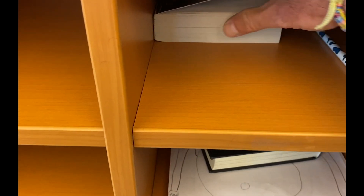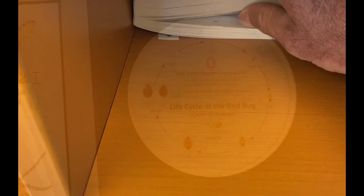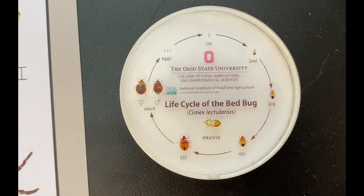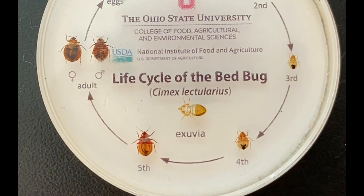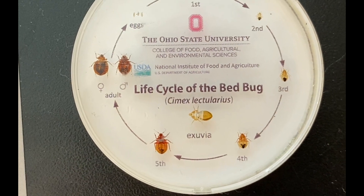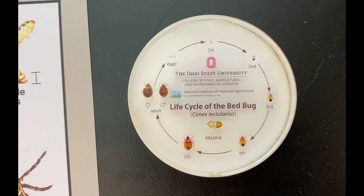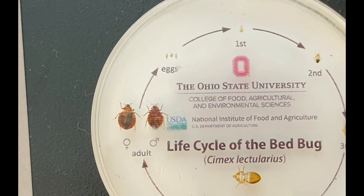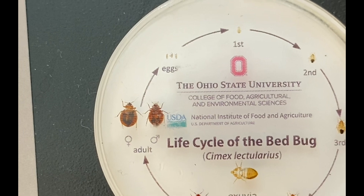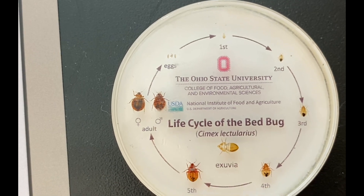Their bodies become more elongated, swollen, and dark red after a blood meal. Immatures have the general appearance of adults but are nearly colorless and only become dark as they mature. Eggs are white and about one millimeter long, or approximately the width of a pencil lead.